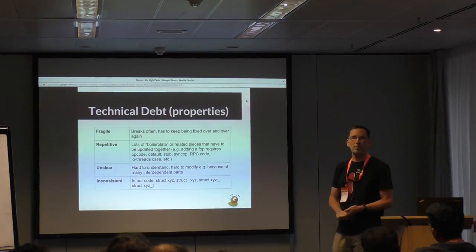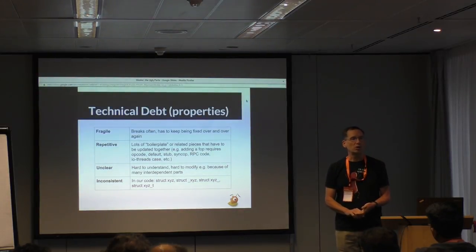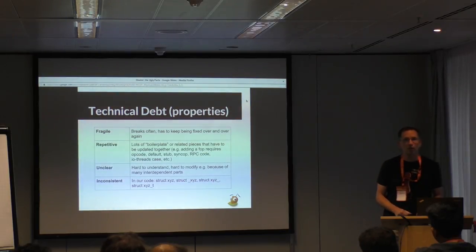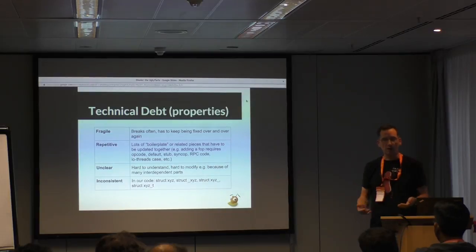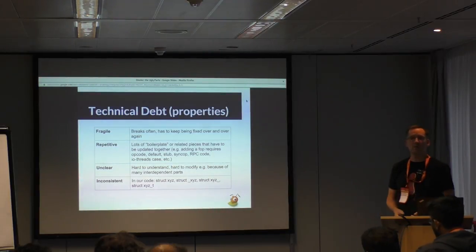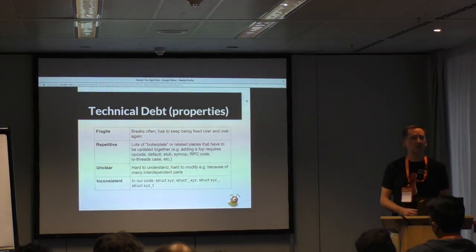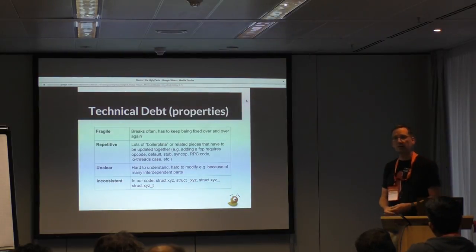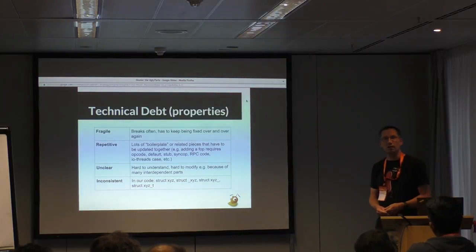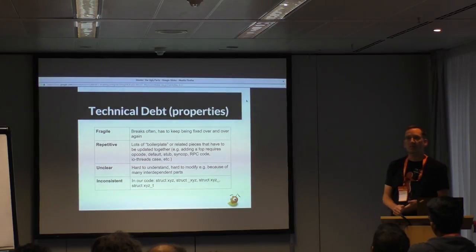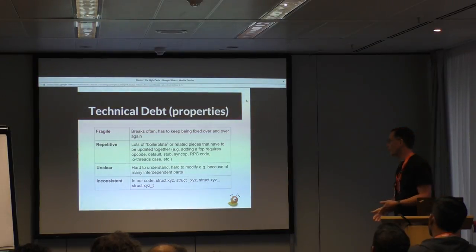Debt-ridden code also tends to be repetitive — there's a lot of boilerplate or there's a lot of copied and pasted code. It's usually easier and quicker to copy something, maybe modify the copy a little bit, than to do a serious rethink and refactor of the existing code. It's usually unclear — it's hard to read and hard to debug.